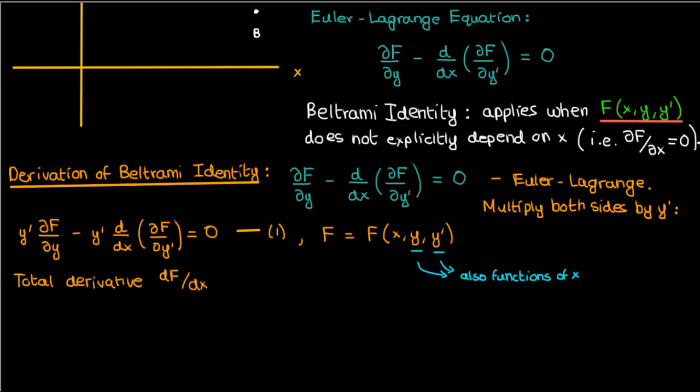This total derivative can be written in terms of the partial derivatives using the chain rule. In this case, dF/dx would be the partial of F with respect to x, plus the partial of F with respect to y times y prime, plus the partial of F with respect to y prime times the derivative of y prime with respect to x.